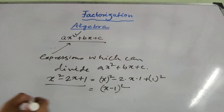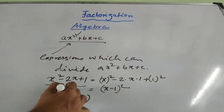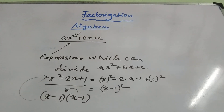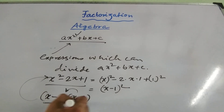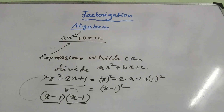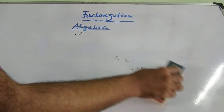So basically there are two expressions: one is (x - 1) and another is (x - 1). Both things when multiplied give the final expression x² minus 2x plus 1. So (x - 1) is one factor and (x - 1) is also another factor. Similarly, we can find out different factorization methods for various types of quadratic equations.